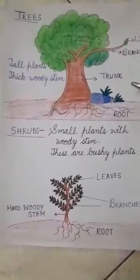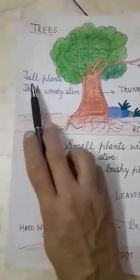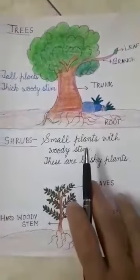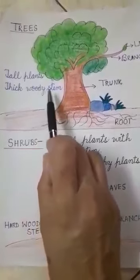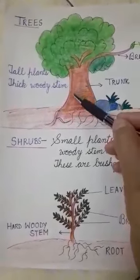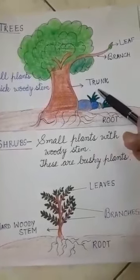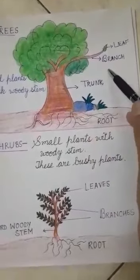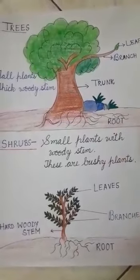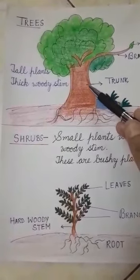The first type is tree. You have seen many trees around you. Tall plants are called trees and they have a thick woody stem. This is its stem — a thick woody stem and we call it the trunk. The stem of a tree is called the trunk. A tree has many branches and many leaves.